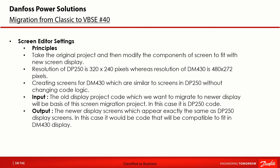As already mentioned, one main point which needs to be considered is the different resolution, so called scalability. The DP250 has 320 by 240 pixels, whereas the DM430 has 480 by 272 pixels. All components need to fit in the new screen size without compromising resolution. Therefore, calculating delta X and delta Y is needed. We will take a look later when it comes to the screen editor and adding the images.